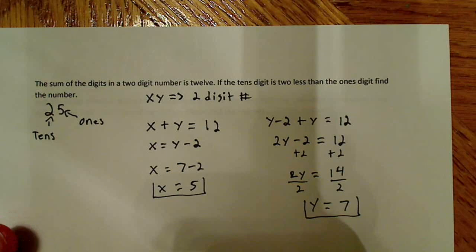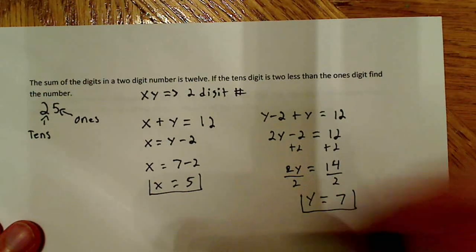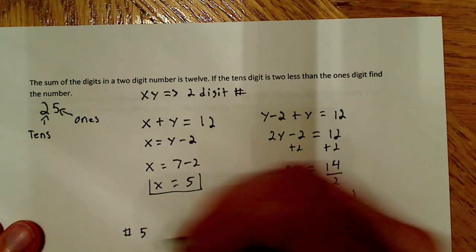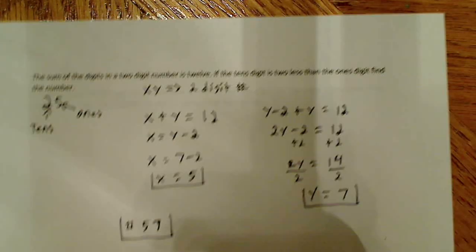I have my two digits. So now it's asking us, from these two digits, find the number. So what's the x, y number? So the number is 57. And the problem is solved.